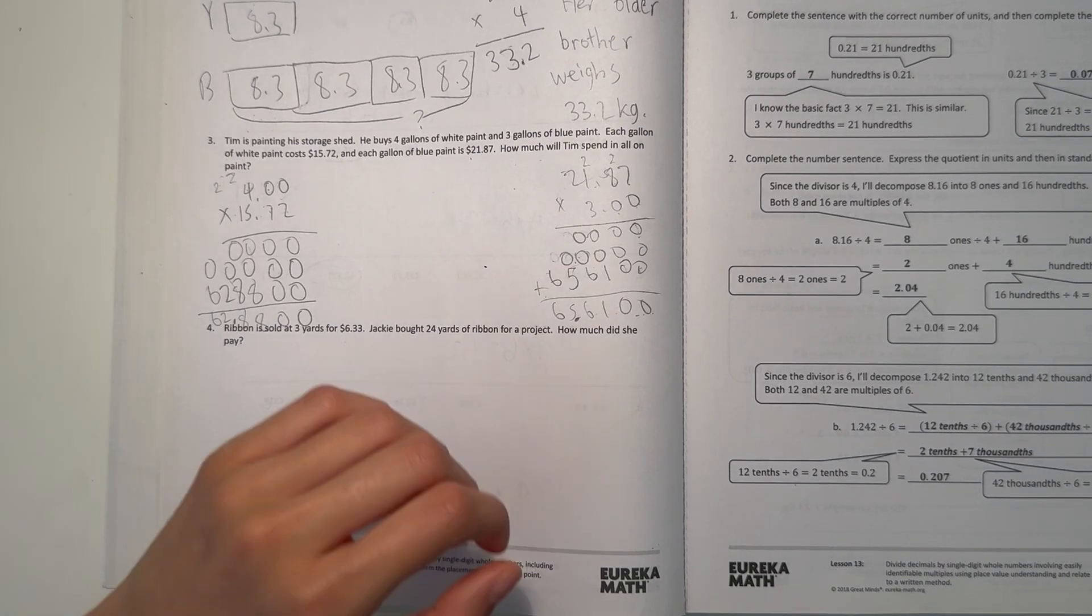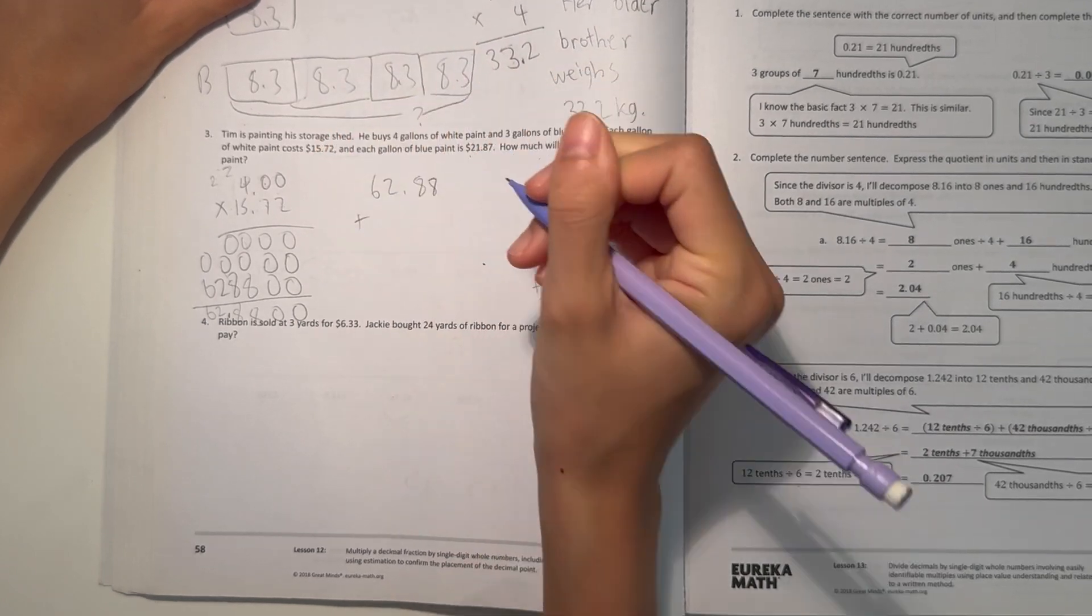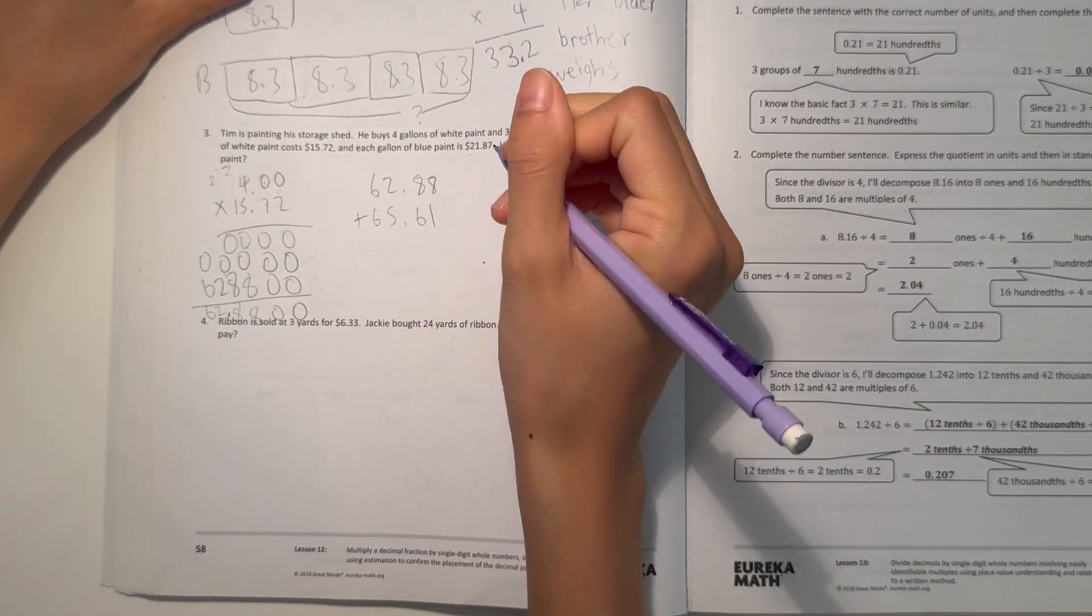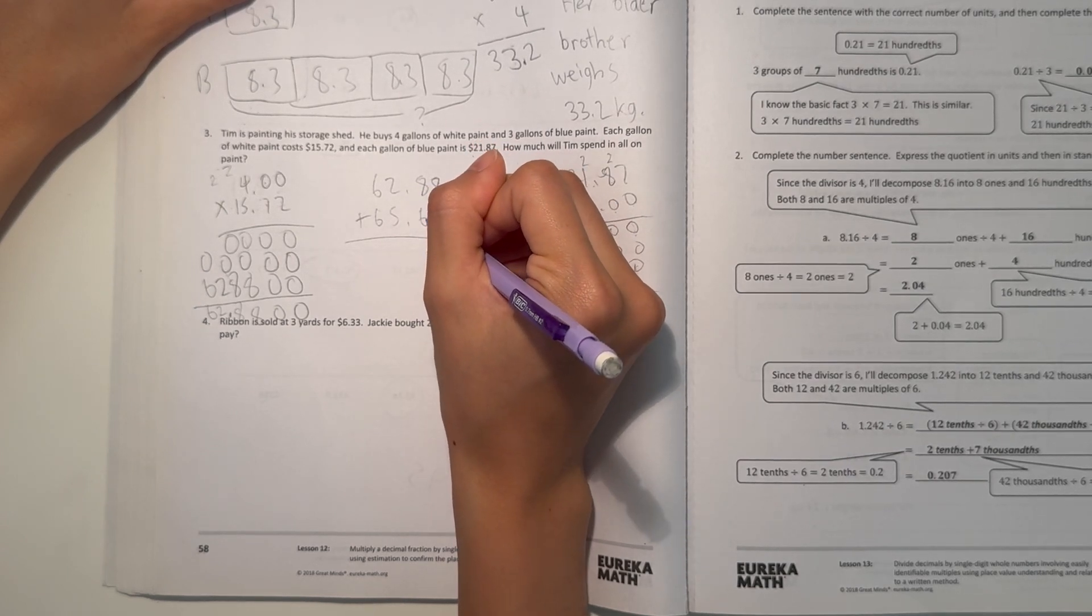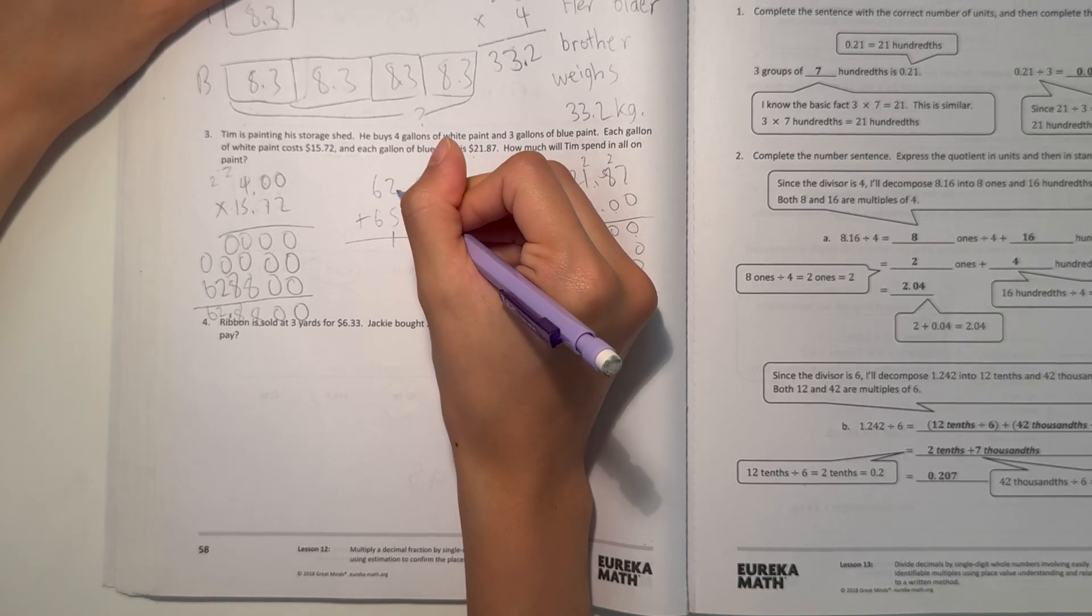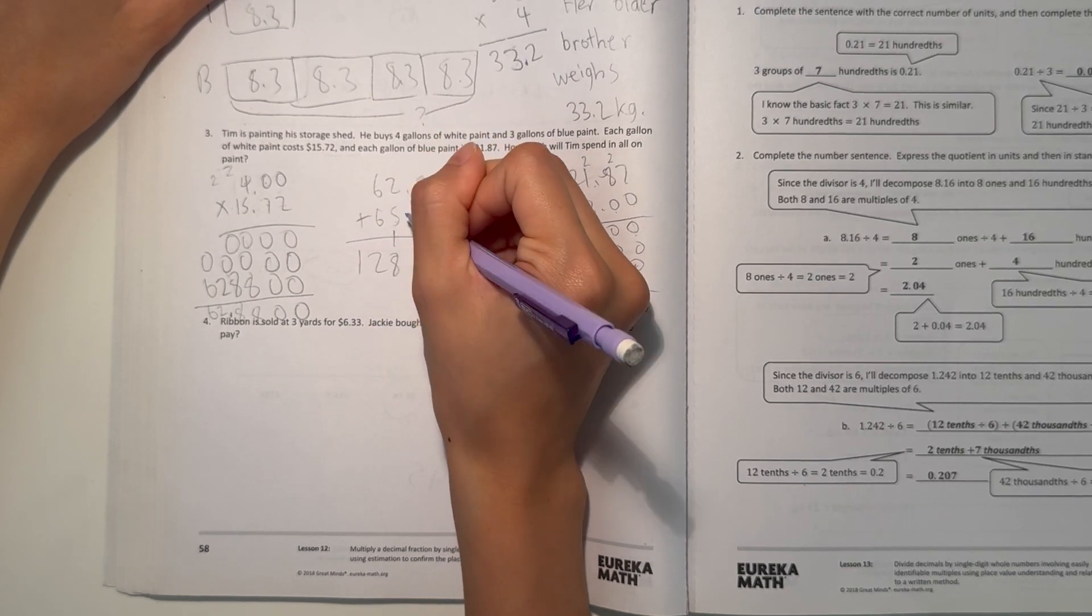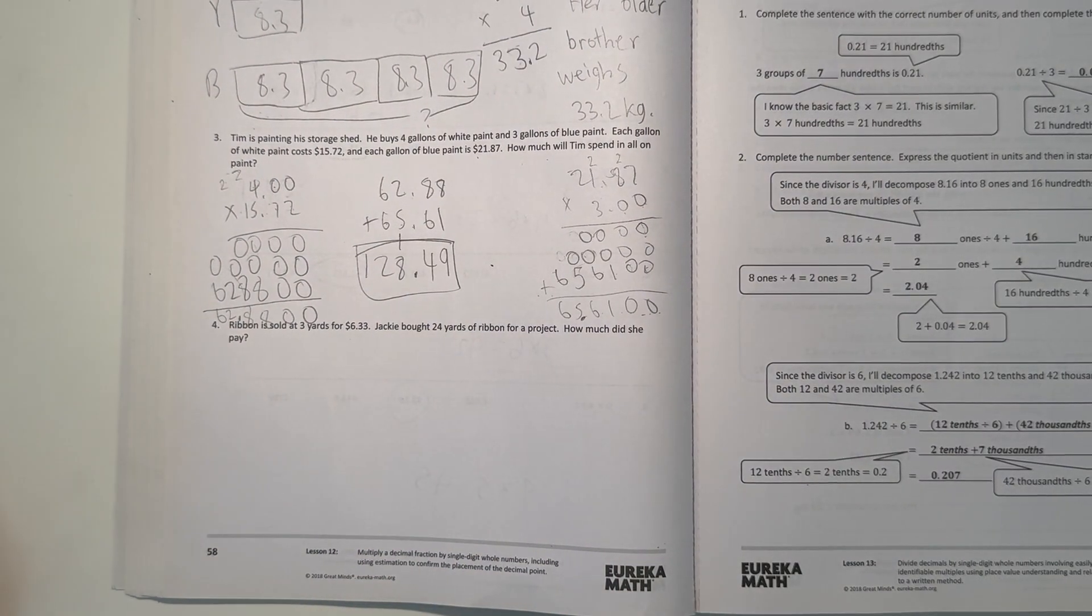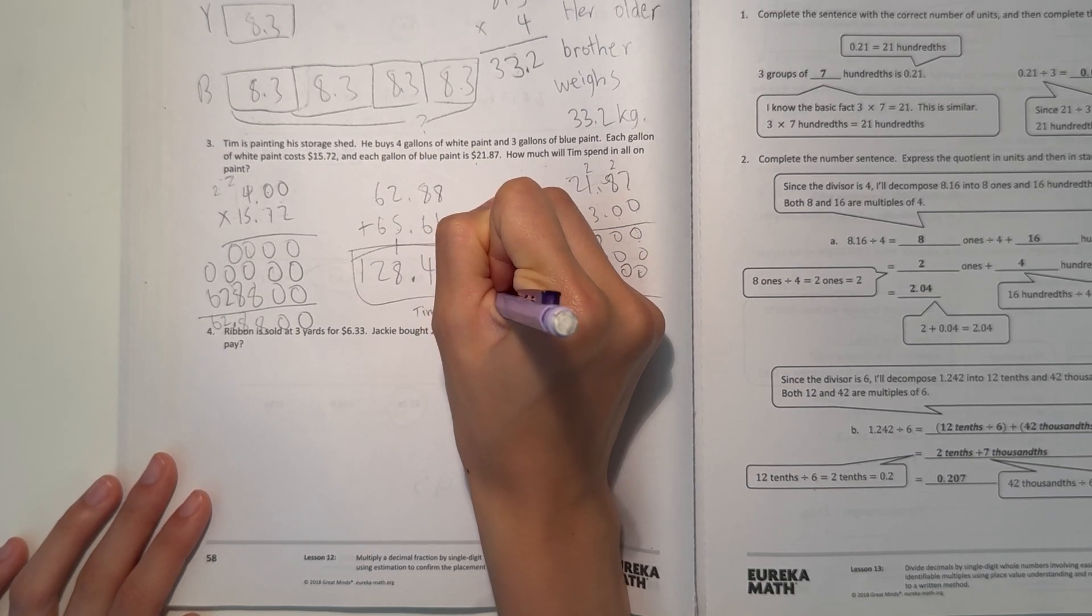So now how much did Tim spend at all? Well, 62.88 plus 65.61. And that equals, 8 plus 1 is 9. 8 plus 6 is 14. Let's see. 2 plus 5 is 7, plus 1 is 8. 6 plus 6 is 12. Now bring the decimal point down. So this is how much Tim spent. Alright, Tim just spent.